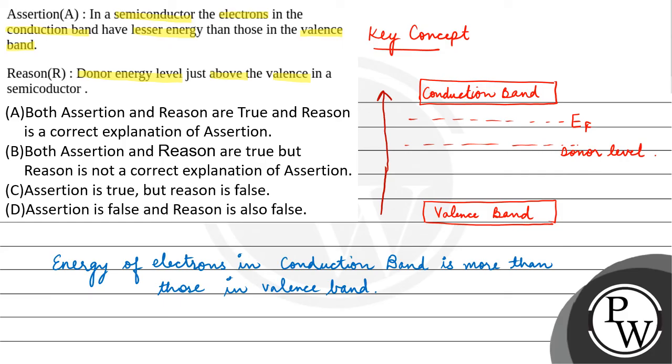Now, the reason talks about the donor energy level is just above the valence band. No. Donor energy level is not just above the valence band. Donor energy level is just below the conduction band.